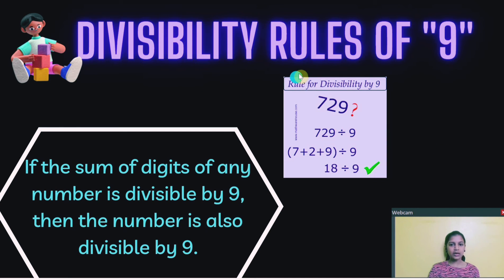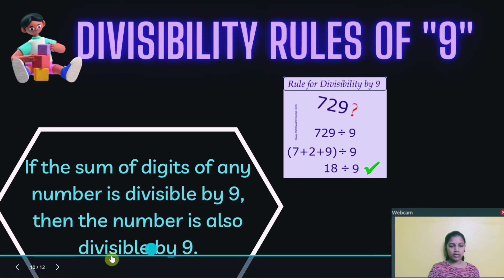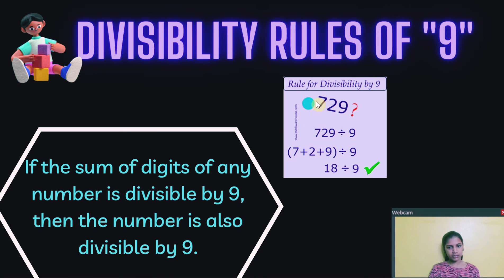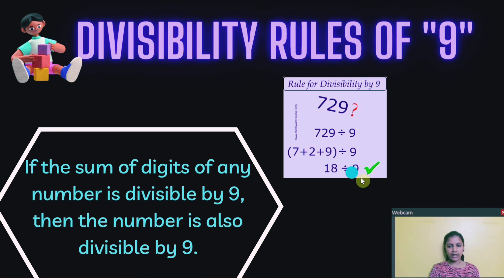Divisibility rules of 9. If the sum of digits of any number is divisible by 9, then the number is also divisible by 9. Example: 729 — is it divisible by 9? Let's check. If you add 7 plus 2 plus 9, you get 18. And 18 is divisible by 9, because 2 nines are 18, or 9 twos are also 18. So 729 is divisible by 9.